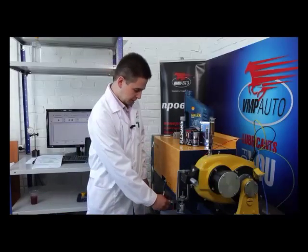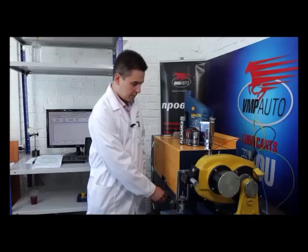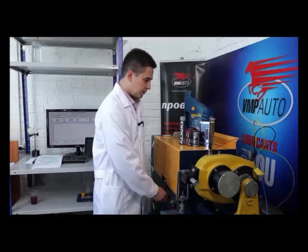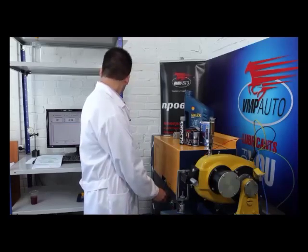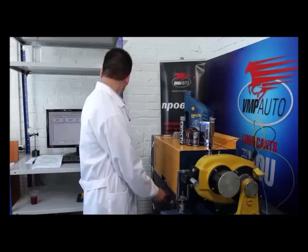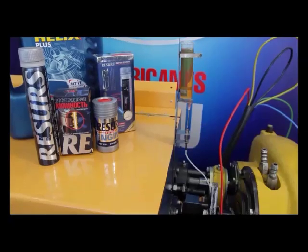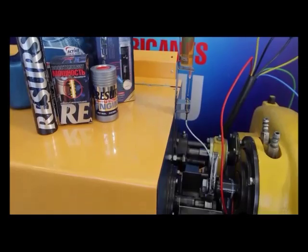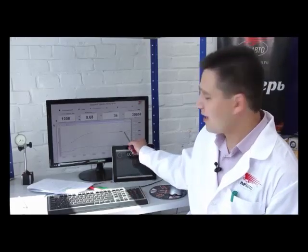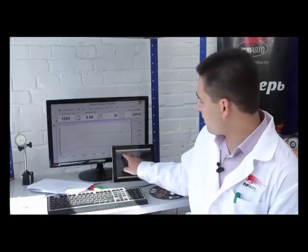We begin running in. For running in, it took 35 minutes. The temperature in friction pair reached the working temperature, and it is 215 degrees. Now, we stop oil supply and start counting the time.